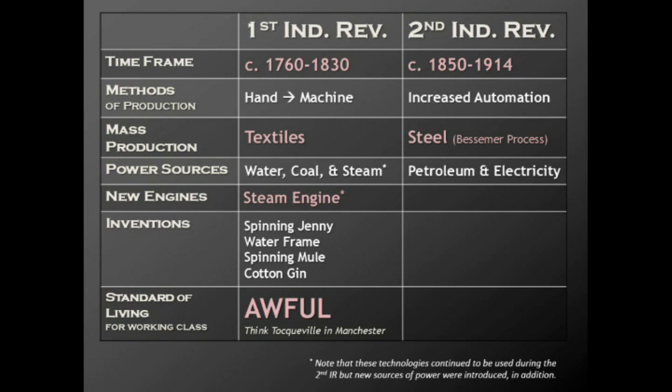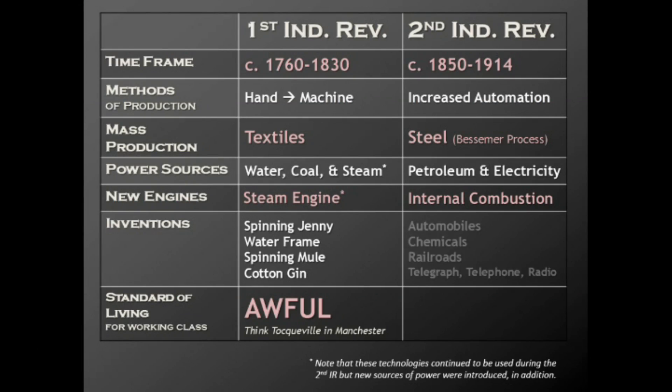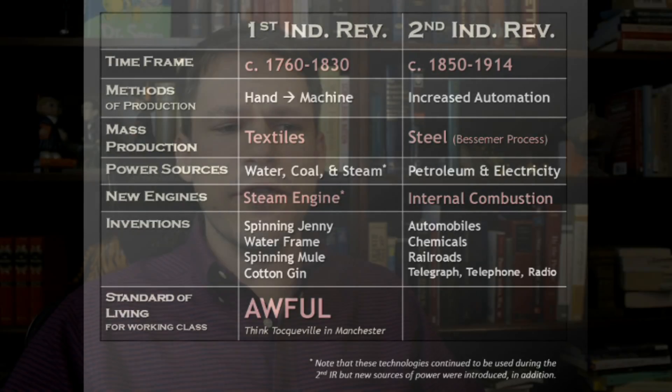As far as new power sources, we see petroleum and electricity — really a lot of the stuff that we use today is powered by some sort of gasoline, natural gas, or fossil fuel, or electricity. The second Industrial Revolution is really bringing us into the modern age. The new engine of the second Industrial Revolution is the internal combustion engine, pretty much the type of engine in your car. Inventions include automobiles, chemicals, railroads, telegraph, telephone, and radio.